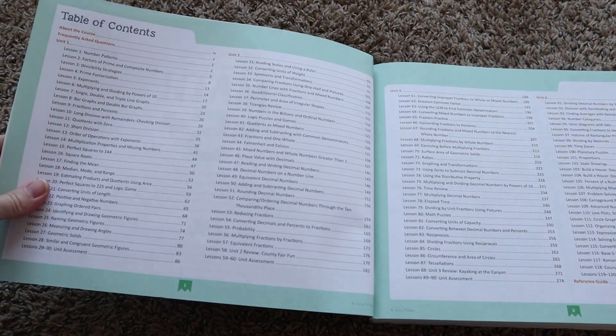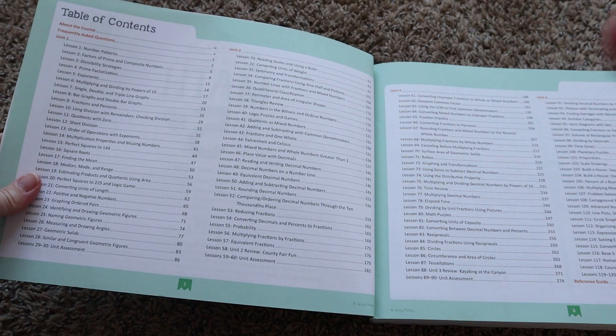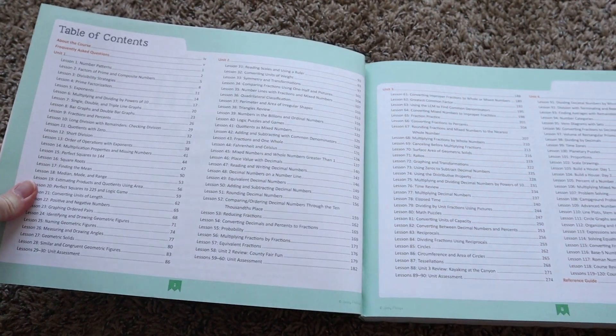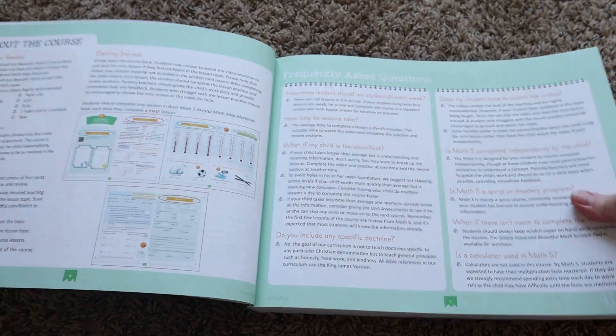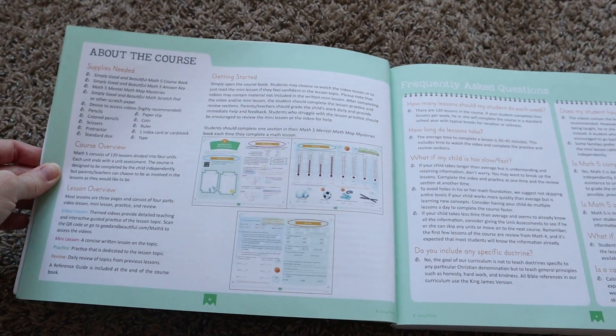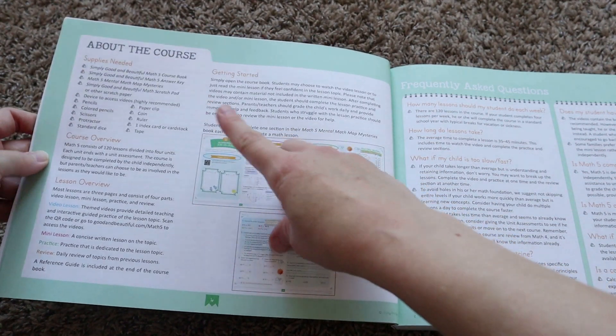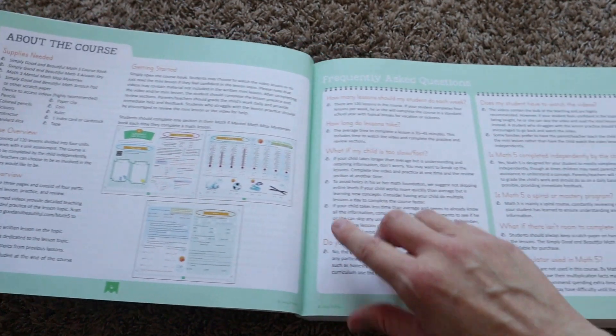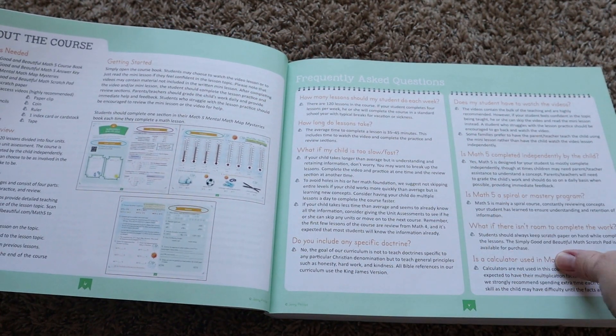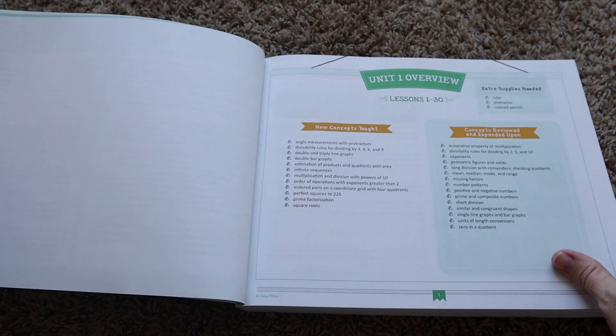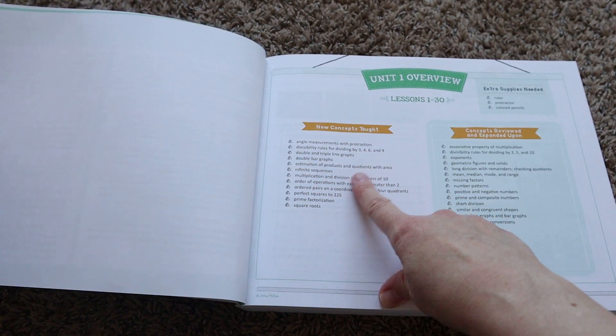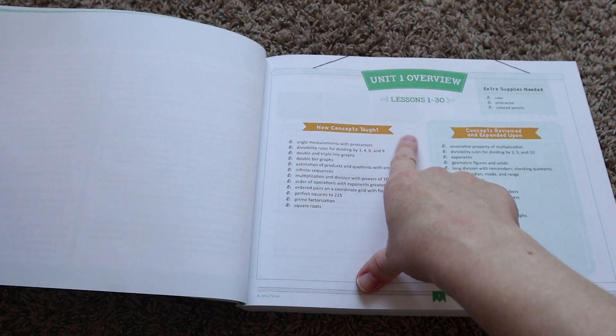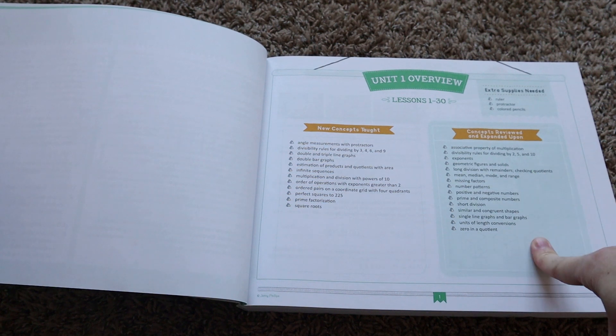As you open it up, you'll see a table of contents that goes over every single lesson and what your child is going to be doing inside of each one and then you will get an About the Course section, Supplies Needed, Lessons Overview and then some Frequently Asked Questions. You will also get a Unit Overview at the beginning of every unit. There are four within the curriculum and then it will go over the Concepts Taught, Concepts Reviewed and Expanded and then any extra supplies needed.